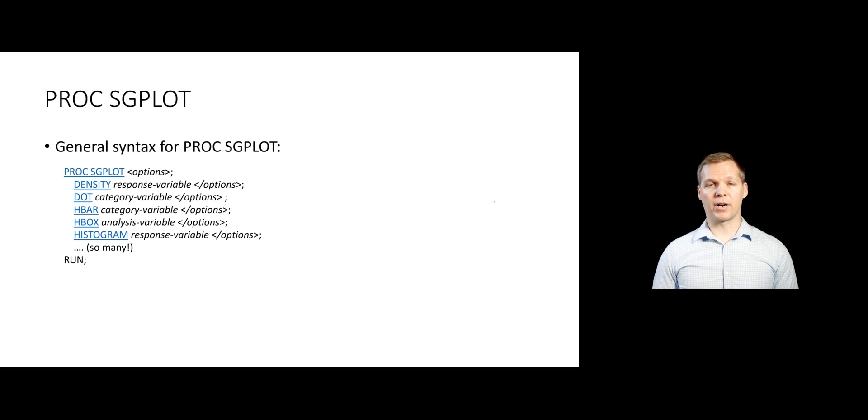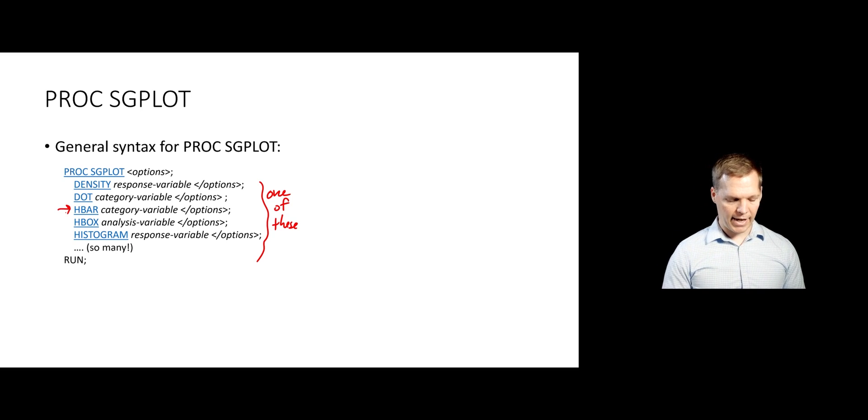Here's the general syntax for PROC SGPLOT. We start with a PROC SGPLOT statement, of course, and then there are options associated with that, particularly specifying the data. And then there are lots of different statements here that will create a particular type of plot. Usually we choose one of these that we want to plot. You can sometimes overlay more than one, and we'll look at that later on as well. But what we'll focus on are things like HBAR to create a horizontal bar plot, for instance.